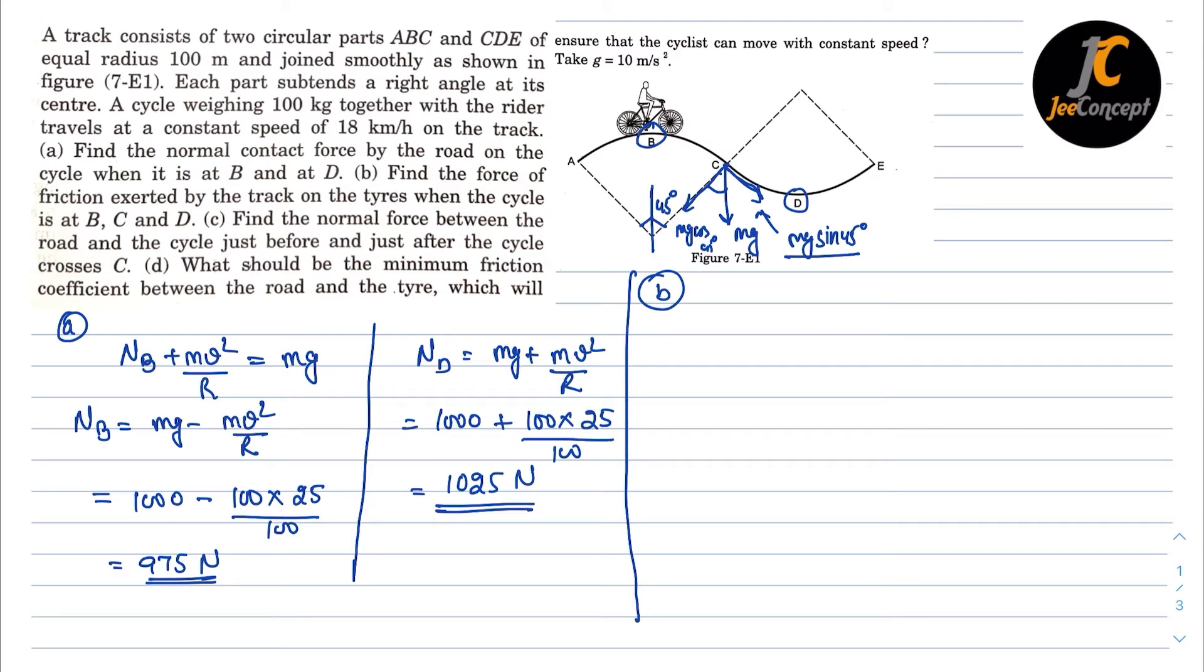Now if we have to calculate the frictional force here at point C, so the frictional force will act in the opposite direction, that is F. And this F frictional force should be equal to MG sin 45 degree. Now the value of M is 100 into G is 10 into sin 45 degree is 1 by root 2. So this will become 707 newton. So this is the solution for part B.